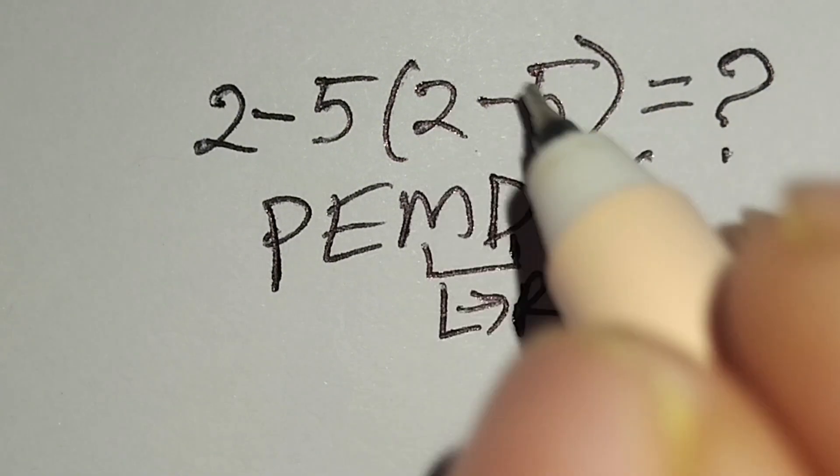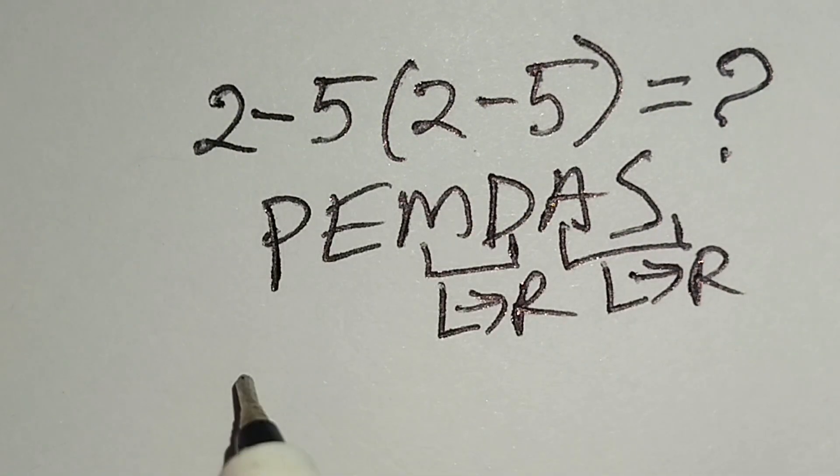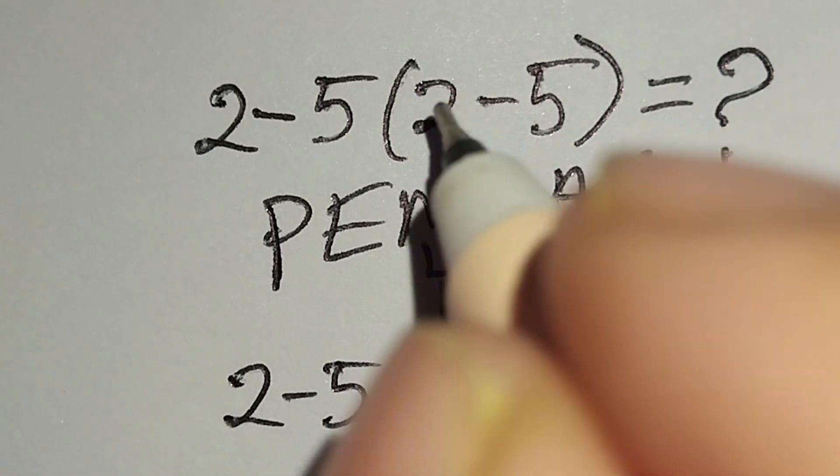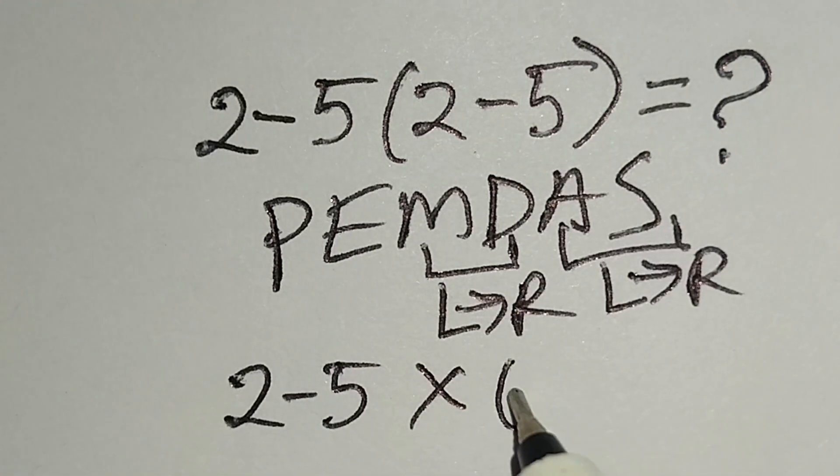Therefore, first we work with the parentheses. Here, 2 minus 5 multiply. This 2 minus 5 gives us negative 3.